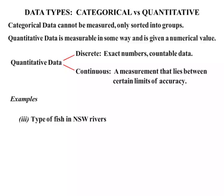Our third example: the type of fish in New South Wales rivers. This time it'll be categorical data because they'll be sorted into groups.